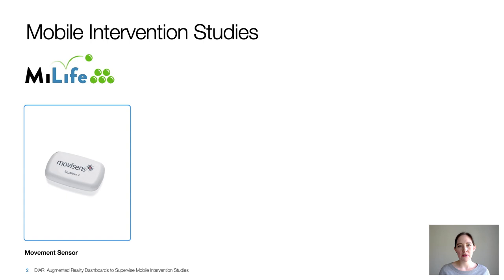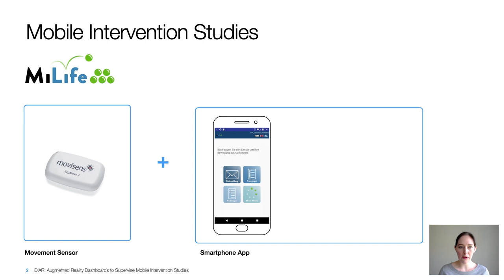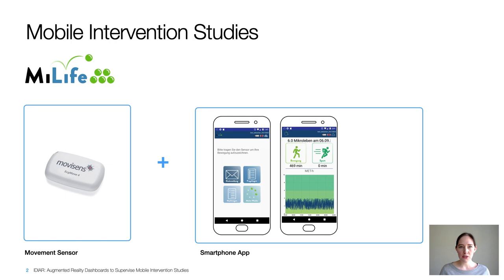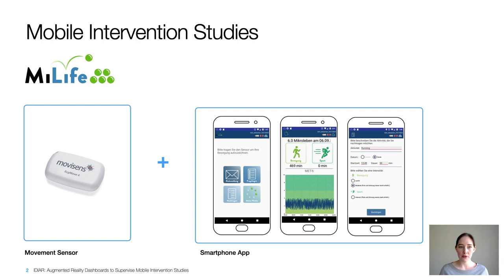Participants wear a movement sensor to track steps and activity level per minute. A custom smartphone application was developed for this study, which is able to feedback physical activity to a study participant on a daily basis and collects additional data via questionnaires. The participants, around 20 to 40 people per round, use the tracking tools over 5 to 7 weeks, resulting in high-dimensional data streams that have to be constantly monitored to prevent data loss and ensure data quality.